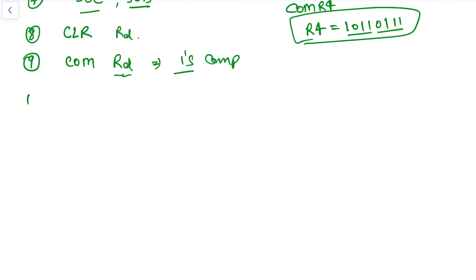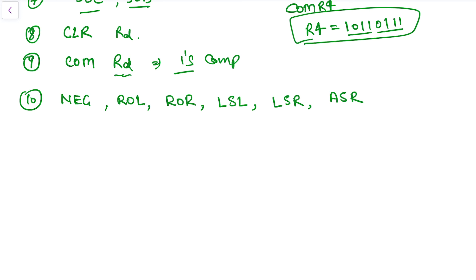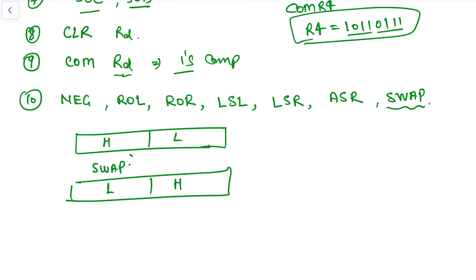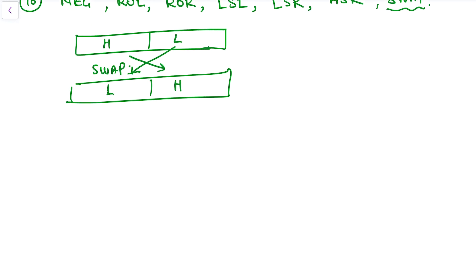Further instructions include NEG, which is the two's complement (negative). Then there is ROL (rotate left), ROR (rotate right), LSL (logical shift left), LSR (logical shift right), and ASR (arithmetic shift right). Finally, the SWAP instruction is quite interesting — if a register holds a higher nibble H and lower nibble L, after SWAP the nibbles are exchanged: L comes to the high position and H goes to the low position.